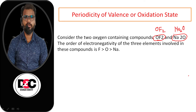The order of electronegativity of the three elements involved in these compounds is: F greater than O greater than Na. This means fluorine has the highest electronegativity, followed by oxygen, then sodium.